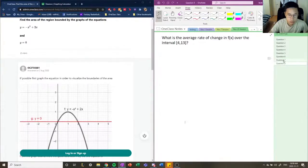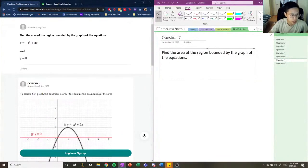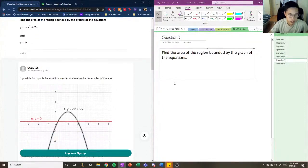All right, let's move on to question number seven here. So question number seven reads: find the area of the region bounded by the graphs of the equation, y equals x minus x squared plus 2x and y equals zero.